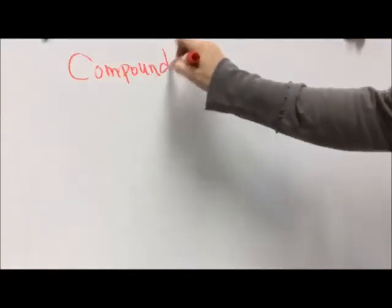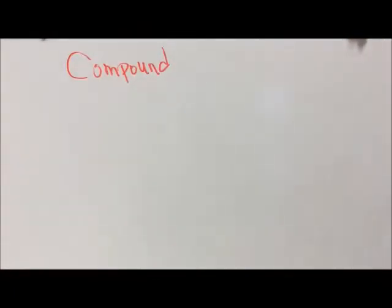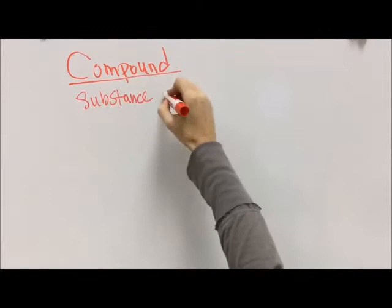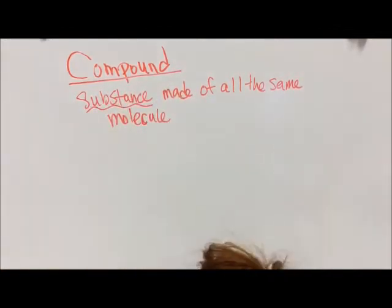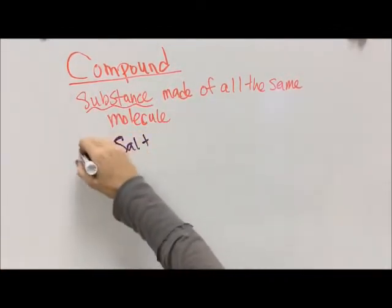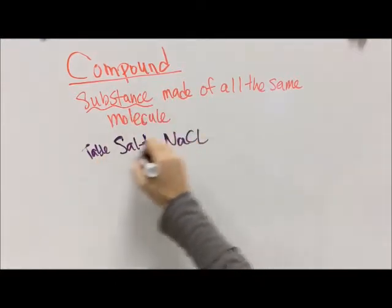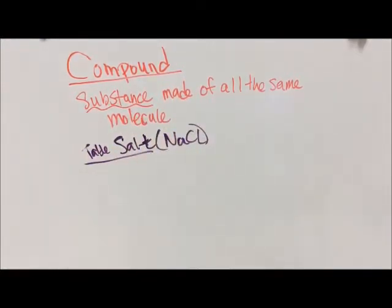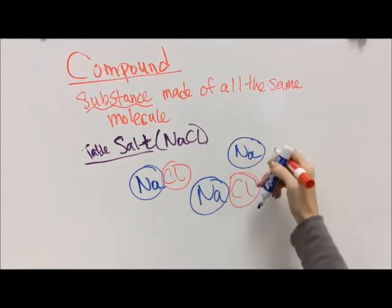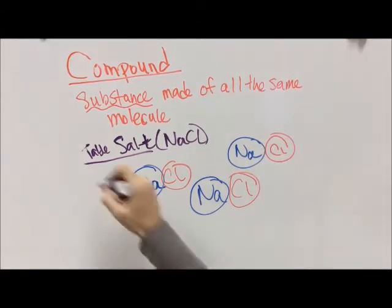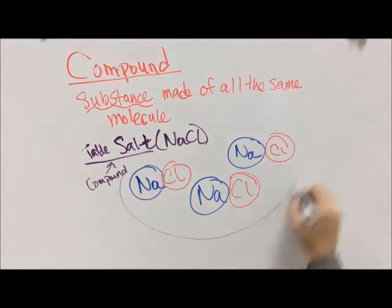A compound is a substance made of a bunch of the same molecule. Elements are made of atoms; compounds are made of molecules. Atoms and molecules are the particles that make up larger substances. For example, table salt, NaCl, is made of a sodium and a chlorine bonded together. The compound is the substance, and the molecule is the individual particle within it.